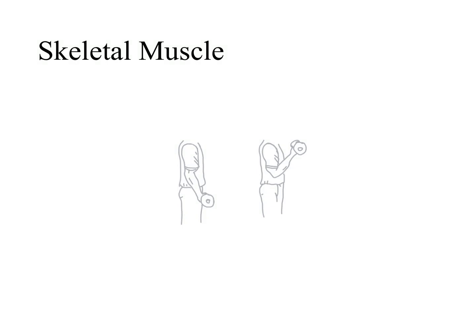Previously, we saw that the biceps brachii is a muscle in the anterior aspect of the arm, going from the scapula all the way down to the radius bone. Since it crosses both the shoulder joint and the elbow joint, when the biceps brachii contracts, it can flex at the elbow and also flex at the shoulder. We also know that we can extend our forearm, and extension is the opposite movement of flexion.